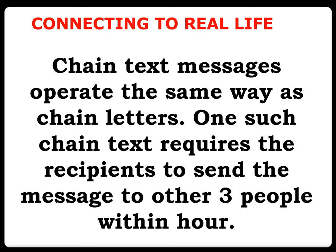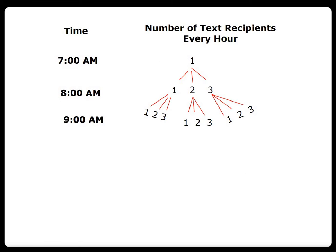Chain text messages operate the same way as chain letters. One such chain text requires the recipients to send the message to three other people within an hour. You're given the time: 7 a.m., 8 a.m., 9 a.m. The number of text recipients every hour — for 7 a.m. we have 1, for 8 a.m. we have 3, and for 9 a.m. we have 9.